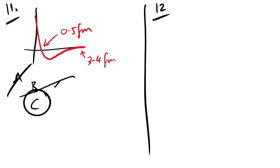Question 12: which statement about strange particles is correct? Option B — strange particles are always created in pairs — is true. In strong interactions, strangeness is conserved, so a strange quark and anti-strange quark must be produced together. The answer is B.